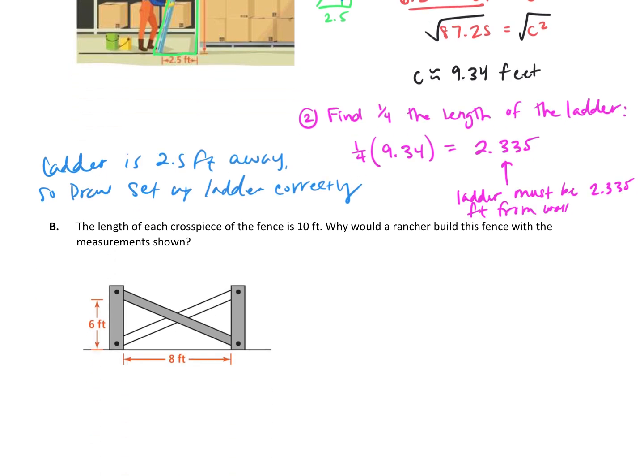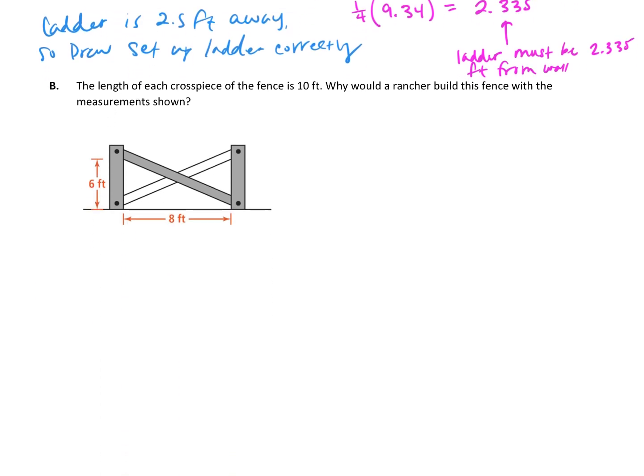All right, part B: the length of each cross piece of the fence is 10 feet. So here we have fence posts, and we have these cross pieces, and they're telling us the cross pieces are 10 feet. Why would a rancher build this fence with the measurements shown? If we take a look at the cross beam right here, they're telling us that is 10 feet. So why would he have a post 6 feet and have the post 8 feet apart?